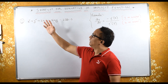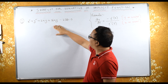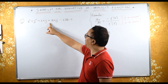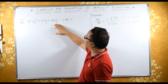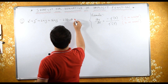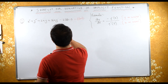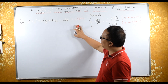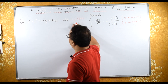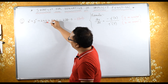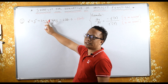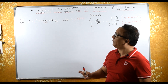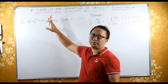Welcome to my channel. This is implicit function — implicit function means a mix of x and y. Here we have a function of x and y. Now for differentiation, we normally differentiate with respect to x, and for the x-y term we apply the u·v rule. But today I am going to speak about a shortcut to find the derivative for implicit functions.